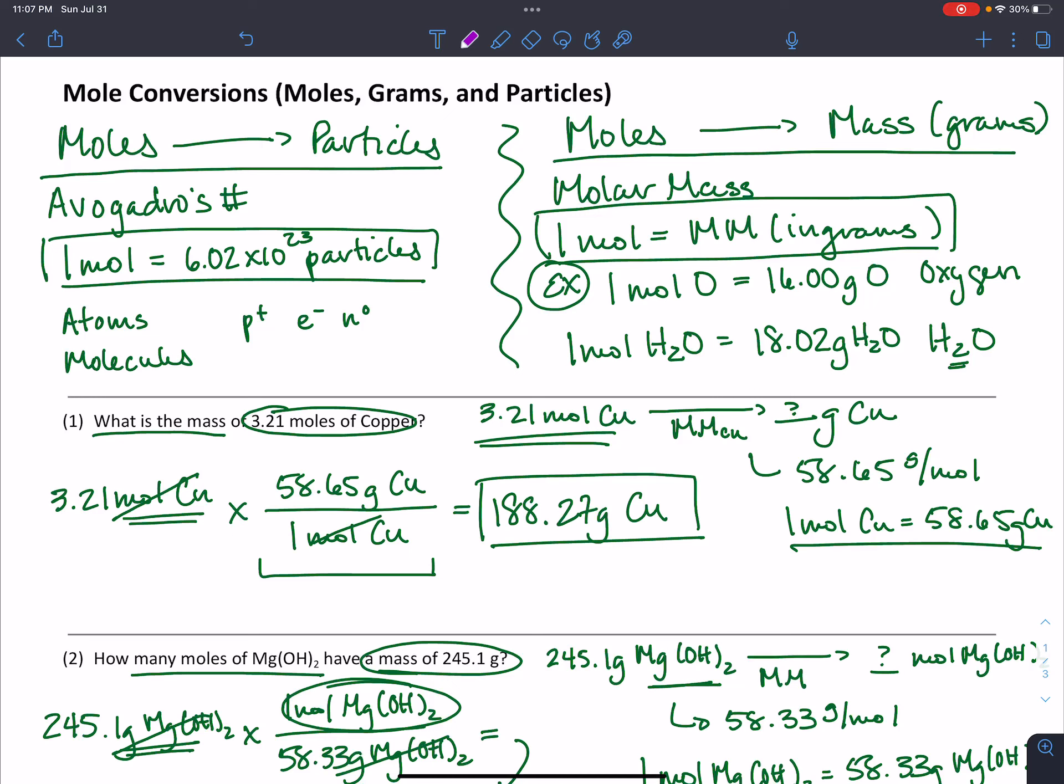Hi everybody, welcome back for the second screencast dealing with molar conversions. Just as a reminder, when we go from moles to particles, we need Avogadro's number to make our unity quality, where one mole of any substance is equal to 6.02 times 10 to the 23rd particles.